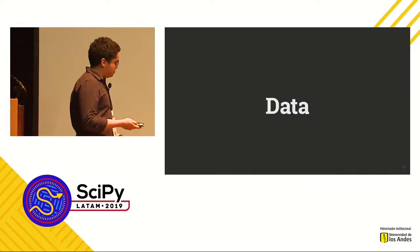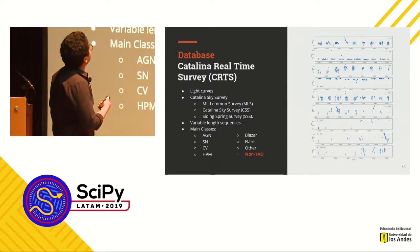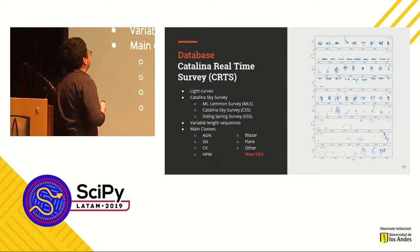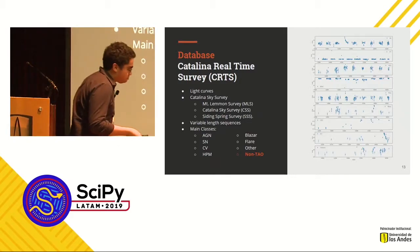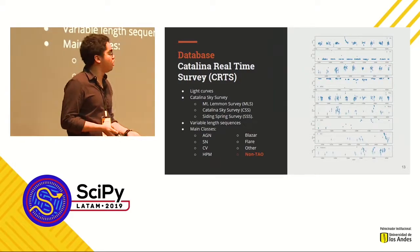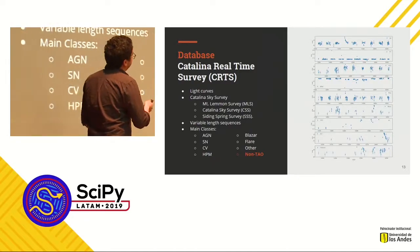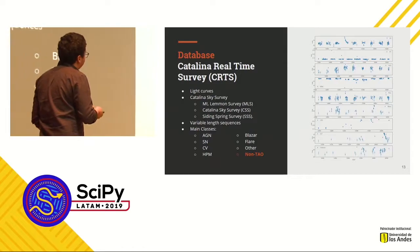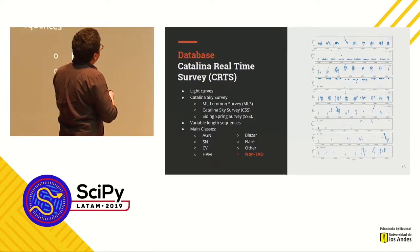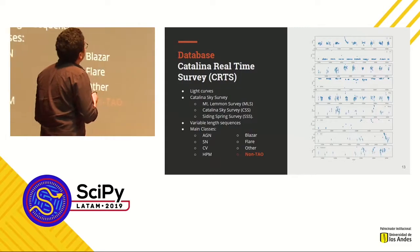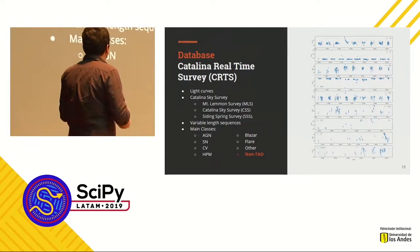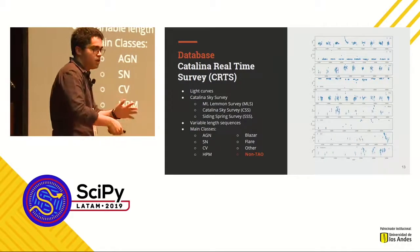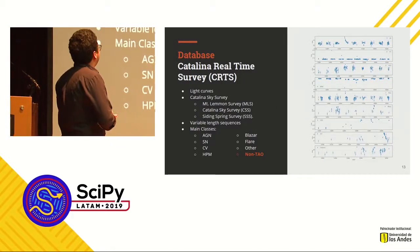So where do we get our data? We used the Catalina Real-Time Survey, the CRTS, which is based off three surveys and has a bunch of light curves from different transient astronomical objects. These are some examples: over here you have a possible supernova, a couple of AGNs, and hyperproper-motion stars. These are the main classes in the dataset: AGNs, supernovas, cataclysmic variables, blazars, flares, and other types of transient astronomical objects.